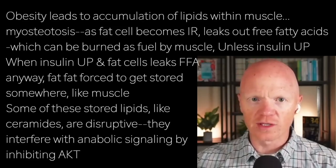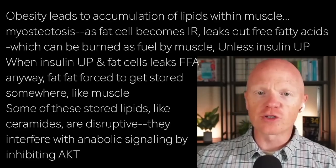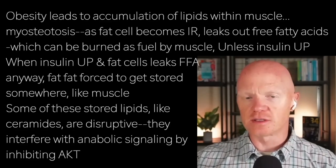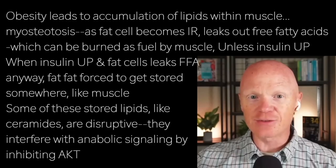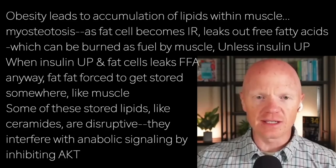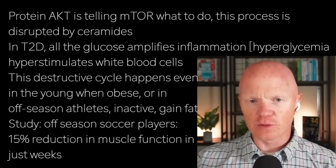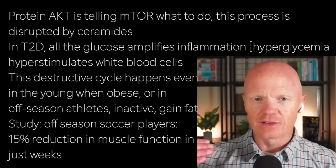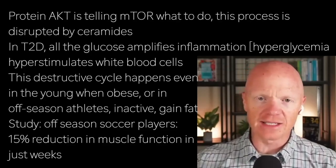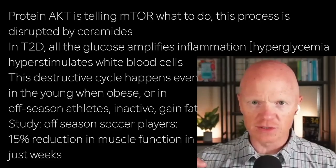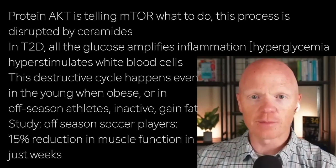Among the lipids the muscle stores, some are more relevant than others. Ceramides, which are simply one of thousands of different types of fat within every cell of the body, are particularly disruptive. Ceramides are so relevant to conversations of metabolic health because they interfere with anabolic signaling by inhibiting a protein called AKT. All of what mTOR is doing is related to what AKT is telling it to do. So these signals get disrupted because ceramides act like a rod jamming up the gears — stopping things from turning and working.